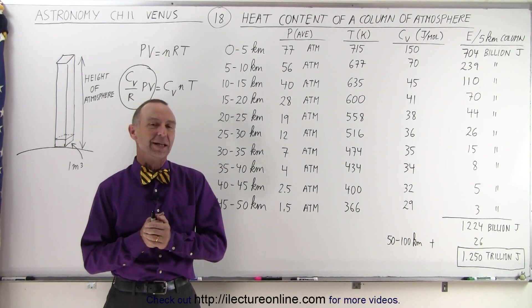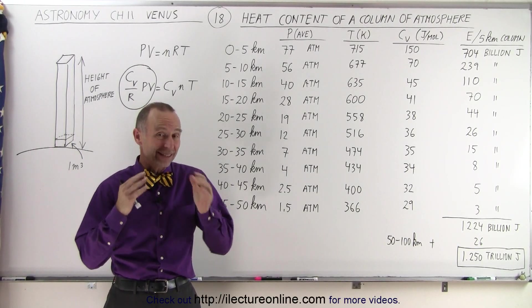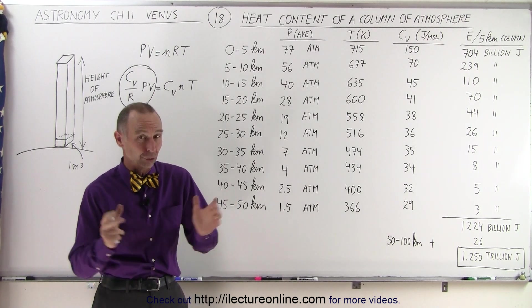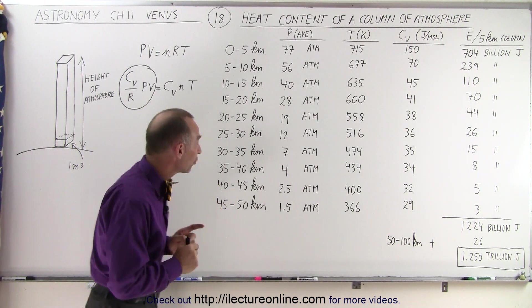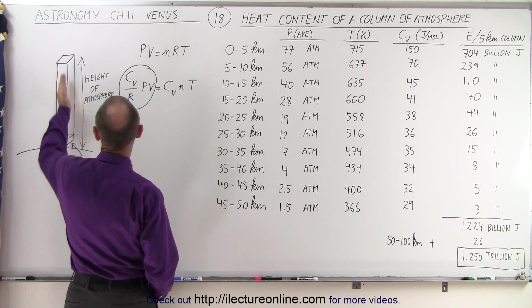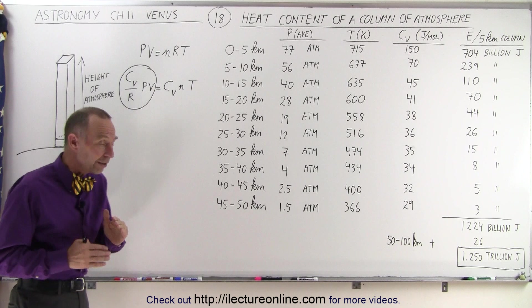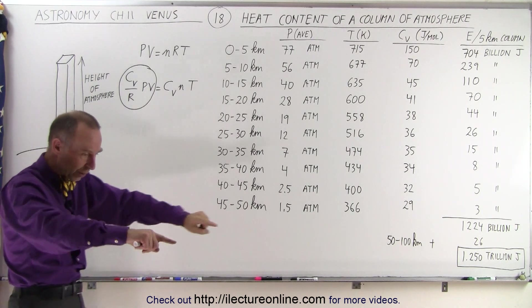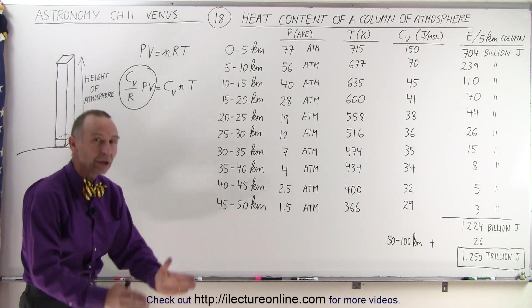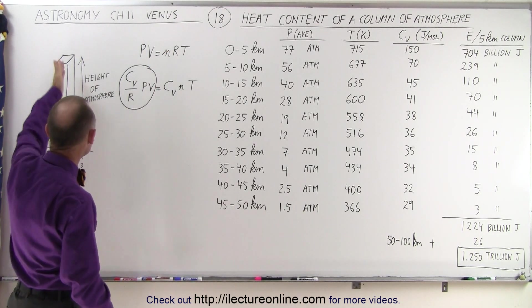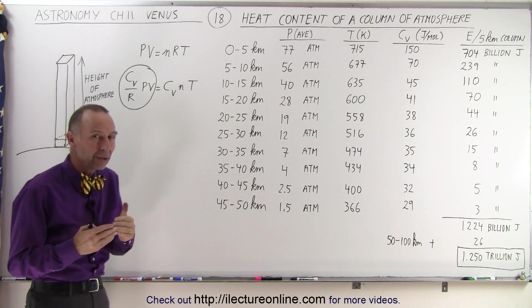Welcome to our lecture online. Now that we have calculated the energy content in one cubic meter of atmosphere on the surface of Venus, we now want to calculate the heat content in a column of atmosphere, all the way from the surface to the very top of the atmosphere. So we take one square meter of area and work that all the way up to the very top, to determine how much energy is contained within a column of atmosphere like that.